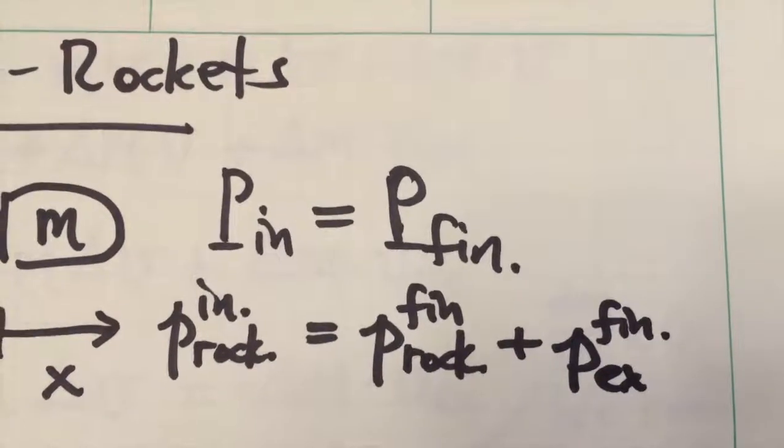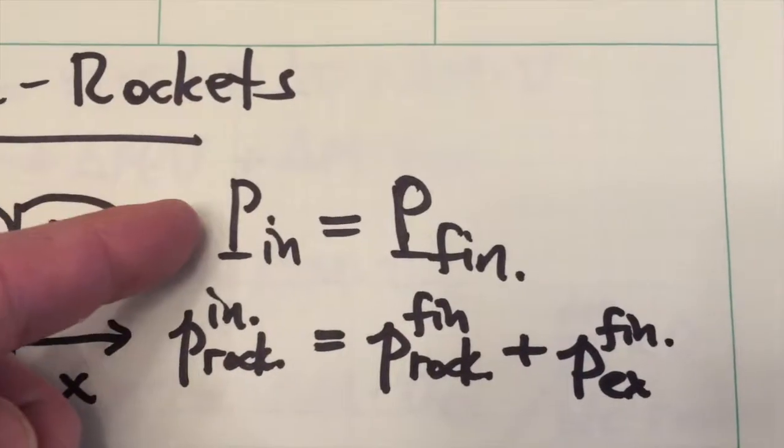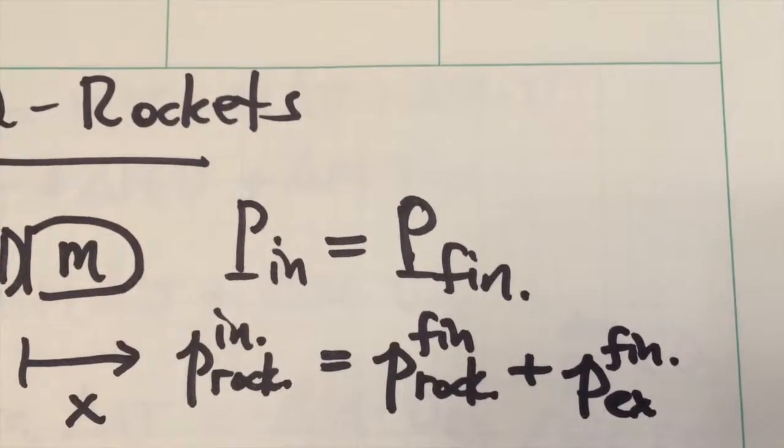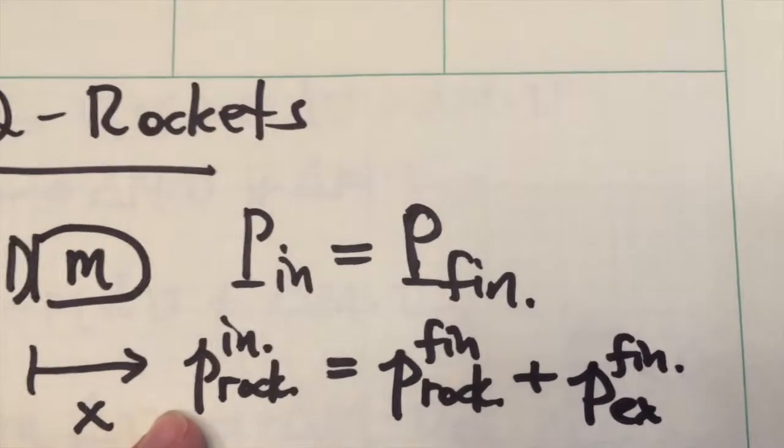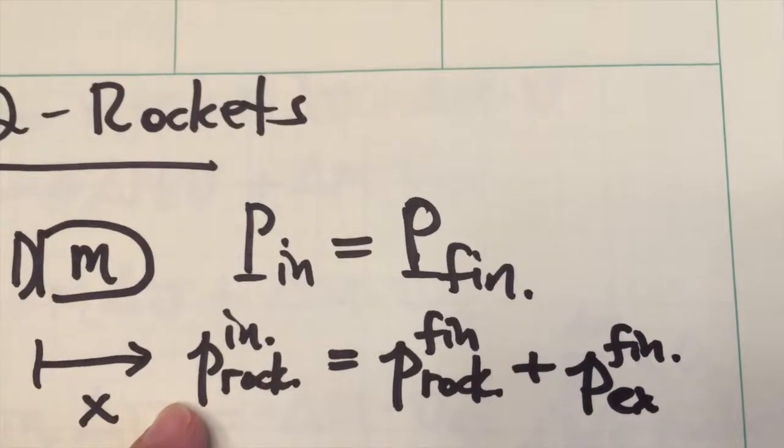This is another case where momentum is conserved, so p initial for the system is equal to p final. In this case, we have the rocket's initial momentum without any exhaust. We imagine that the exhaust hasn't been exhausted yet.